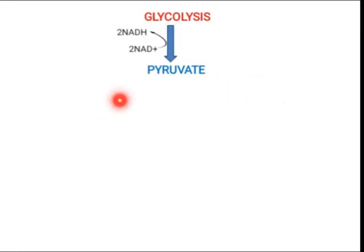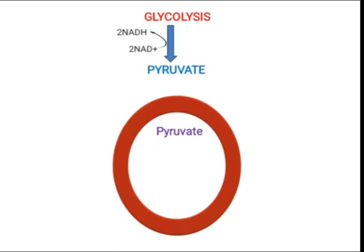Now coming towards fermentation — how does fermentation work? Imagine that this pyruvate has a fermentation pathway to follow. When pyruvate follows the fermentation pathway, it makes end products. The end products of fermentation, with respect to different bacteria, can be lactic acid, ethanol, acetic acid, and others.